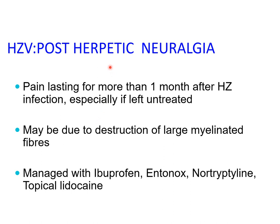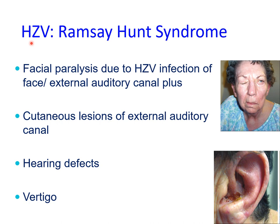Post-herpetic neuralgia is generally managed with a combination of ibuprofen, entonox (nitrous oxide), tricyclic antidepressants such as amitriptyline and nortriptyline, and topical lidocaine. Another remarkable manifestation of herpes zoster virus infection is Ramsay-Hunt syndrome, which follows herpes zoster infection involving the ear. Lesions involving the external ear and external auditory canal may lead to hearing defects, vertigo, and facial paralysis — this combination is known as Ramsay-Hunt syndrome, involving the ear canal and the facial nerve.